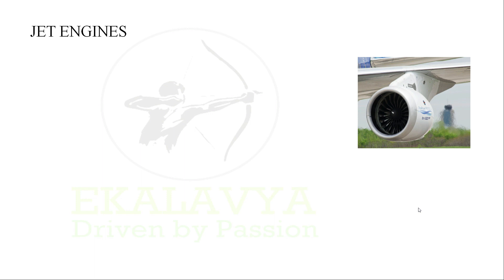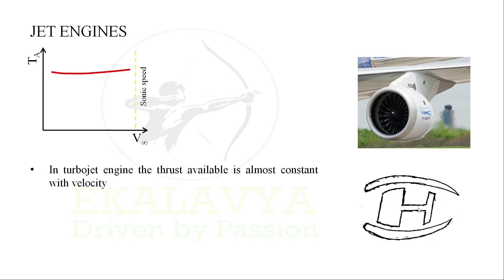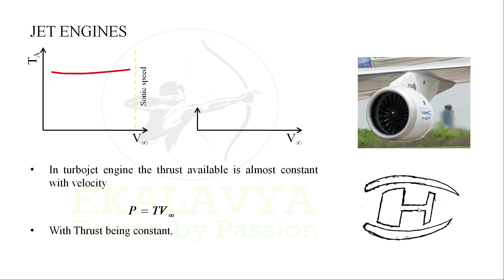For turbojet engines, the diagram of a jet engine can be simplified as shown in the figure. The thrust available curve for a jet engine is as shown — in a turbojet engine, the thrust available is almost constant with velocity. Since power is a product of thrust and velocity, and thrust being constant, we see that the power available varies linearly with velocity.